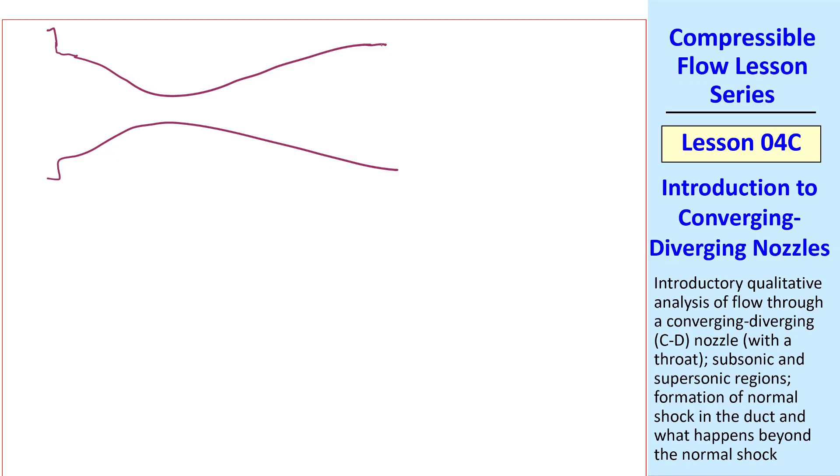I'll sketch the duct and discuss some things in more detail here. Here's our CD nozzle, with upstream stagnation pressure P0, and back pressure Pb. And the minimum area is the throat. The flow accelerates through the throat, but then either decelerates or accelerates here, depending on Pb. When Pb is equal to Pc, the flow is subsonic up to the throat, which is just sonic, and then the flow decelerates after that. If Pb is just a little bit lower, a shock forms very close to the throat. As Pb decreases, the shock moves downstream. For this case, the flow is subsonic, sonic, and then supersonic, up to the shock, and subsonic afterward.